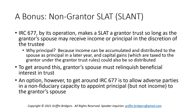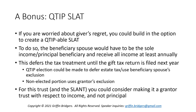Code Section 677 covers a couple of scenarios: income can be accumulated and distributed to the spouse as principal in a later year, and capital gains — usually taxed to the grantor under the grantor trust rules — could also be assigned to principal and distributed. So any discretionary distribution to a spouse causes it to be a grantor trust. To get around this, the grantor's spouse has to relinquish the beneficial interest in the trust, which is bad because it cuts off their access and the grantor's indirect access as well. An option you can bake in from the beginning is to allow adverse parties in a non-fiduciary capacity — such as beneficiaries — to have the power to appoint principal but not income to the grantor's spouse, creating what's known as a SLANT — a non-grantor SLAT.